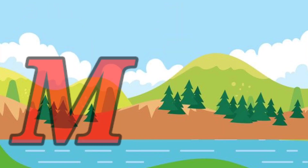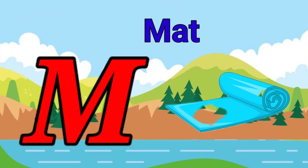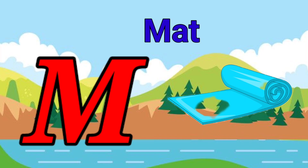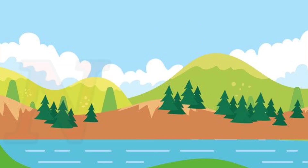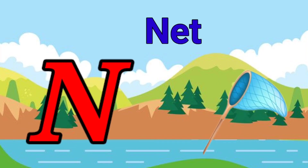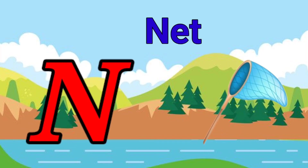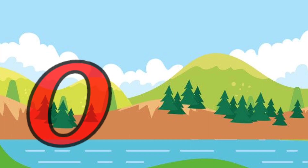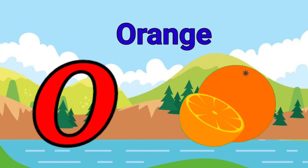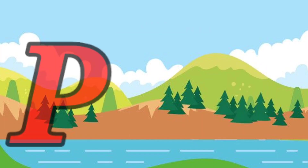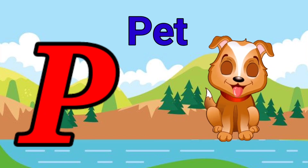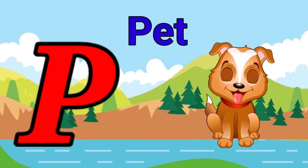M is for mat, m-m-mat. N is for net, n-n-net. O is for orange, o-o-orange. P is for pet, p-p-pet.